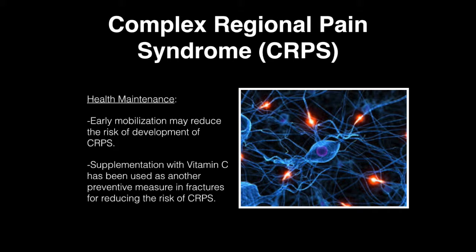Under health maintenance, early mobilization may reduce the risk of development of complex regional pain syndrome. Supplementation with vitamin C has been used as a preventive measure in fractures to reduce the risk of complex regional pain syndrome.